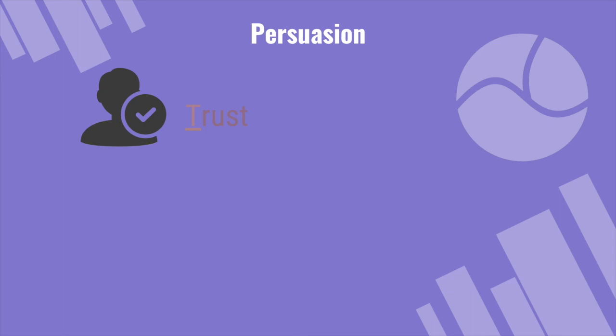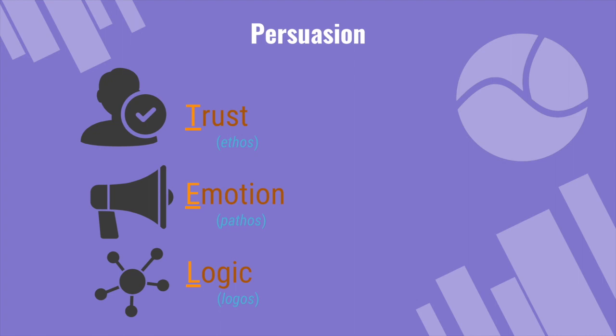Here's how we can think of this: ethos is trust, pathos is an appeal to emotion, and logos is logic. We can remember this acronym — T-E-L: trust, emotion, and logic. These are three aspects of every act of communication. Whether you read something, see an advertisement, or hear a song, any act of communication can be thought about through these three different principles.